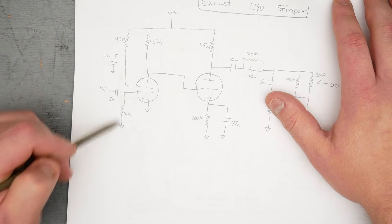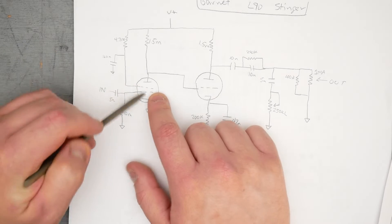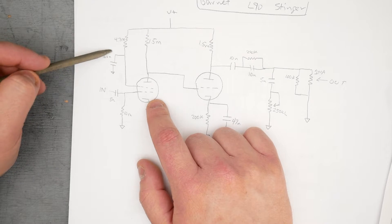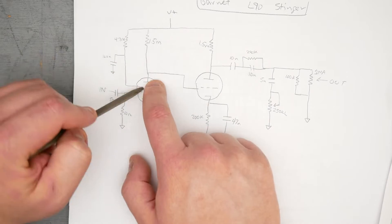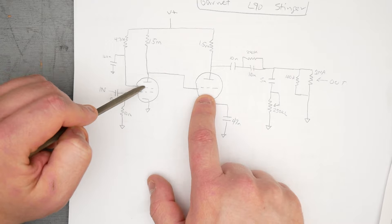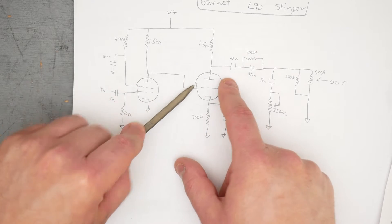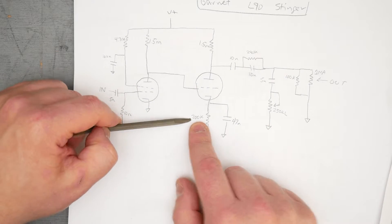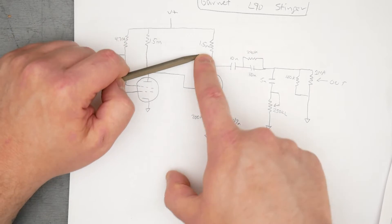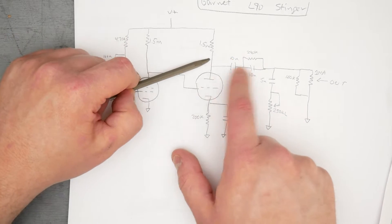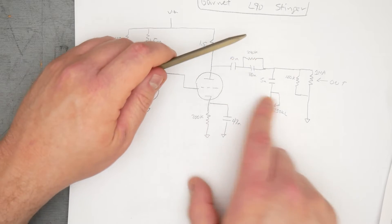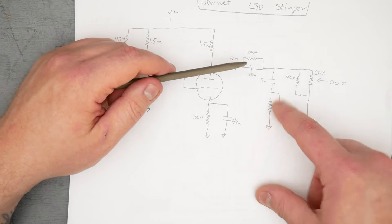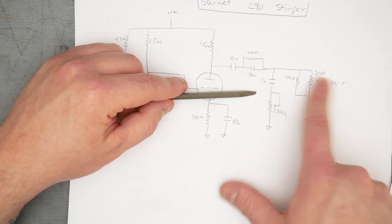Signal comes in, 10 meg grid leak resistor. This is the pentode, here's our screen connection with 100 nanofarad cap. Off that plate connection here we have our direct coupling into the second, the triode stage of the 6AN8. 200k cathode resistor, 479 bypass cap, 1.5 meg plate resistor, and then out of the output cap, a little tone circuit here. Here's our treble cut control and then our volume output.